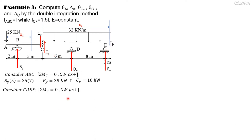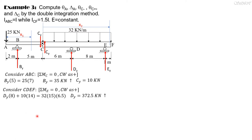Taking clockwise as positive: Dy times 8 plus 10 times 14 minus 32 times 15 times... the center is 7.5 from the right, but taking moment about E: 7.5 minus 1 gives a moment arm of 6.5. Solving for Dy: Dy equals 372.5 kN upward.